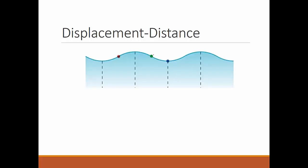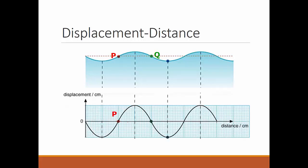If you have a water wave like this, the displacement-distance graph would look something based on the flat line, where the wave is not disturbed. So points P and Q, if you translate to a displacement-distance graph, would be here and here — at zero — because it is based on comparing the difference from the flat line. A point R would correspond to a certain displacement, which is the distance from the flat line to that point.